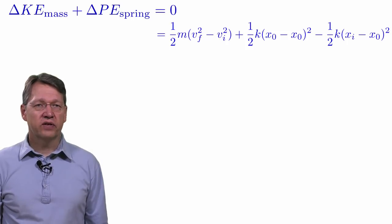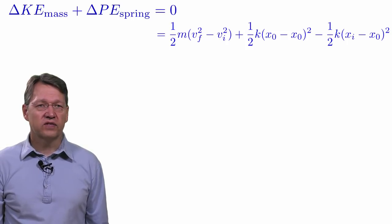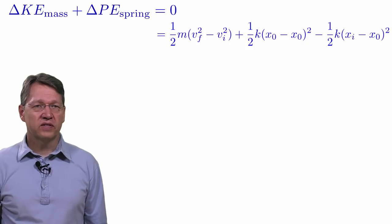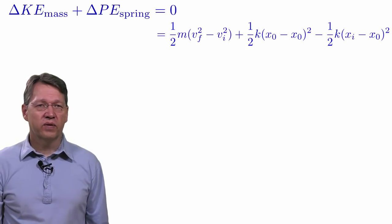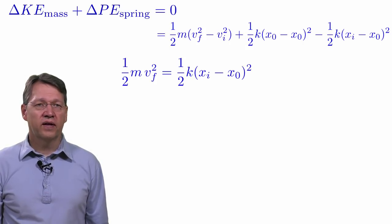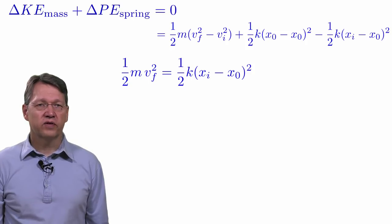And the change in potential energy is proportional to the difference of (x_final - x0)² and (x_initial - x0)². In this case, x_final equals x0 and v_initial is 0, so we get a simpler equation. The final kinetic energy is equal to the initial potential energy.